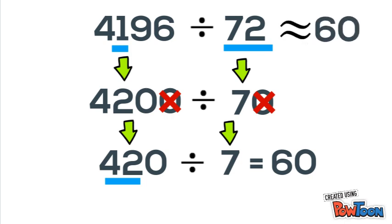So 60 is the approximate answer to 4196 divided by 72.